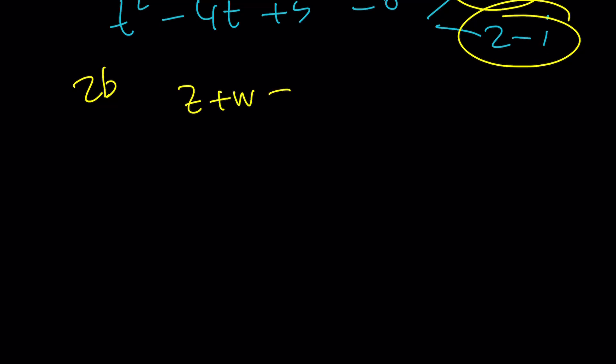Z plus w is equal to 4. Z cubed plus w cubed is equal to 4. So how does the 2B method work? Easy. Easy. We're going to use kind of Vieta's formulas again, right?